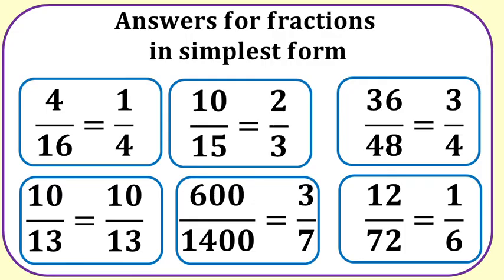Here are the answers for the practice examples. Four sixteenths equals one fourth or one quarter. Ten fifteenths equals two thirds. Thirty-six forty-eighths equals three fourths or three quarters. Ten thirteenths is already in simplest form. Six hundred over fourteen hundred equals three sevenths. Twelve over seventy-two equals one sixth.